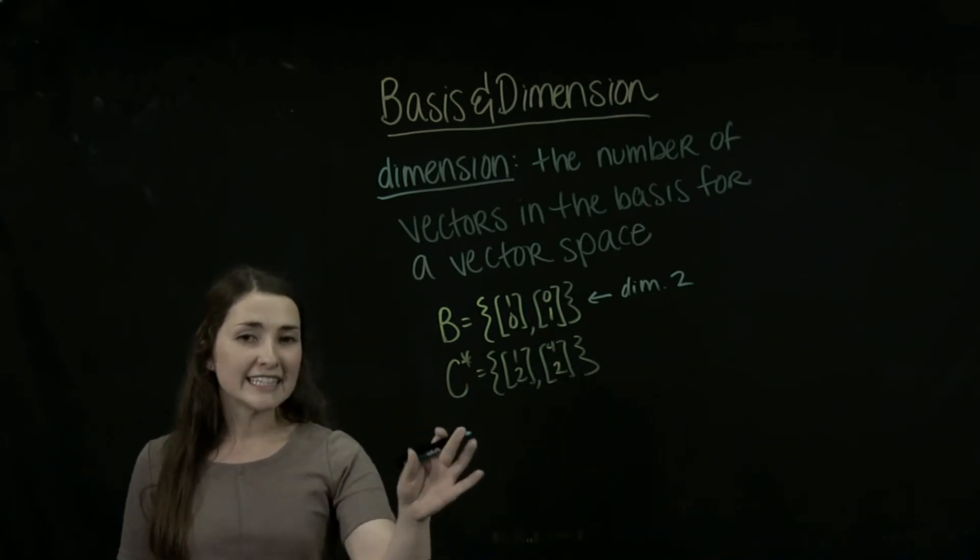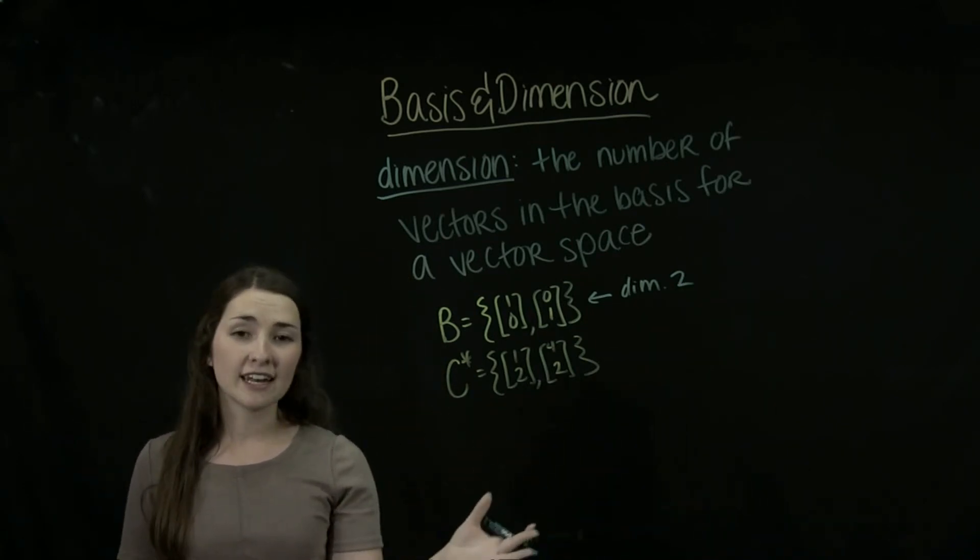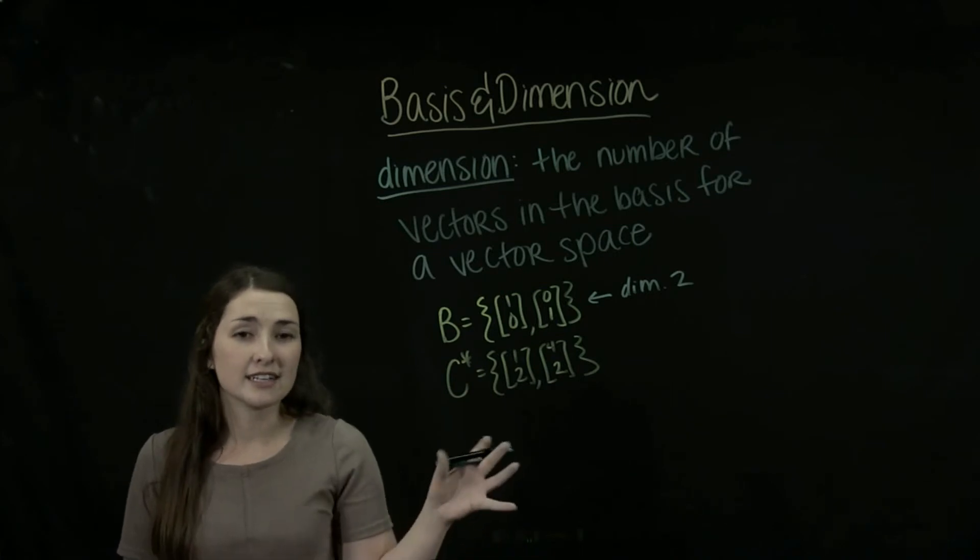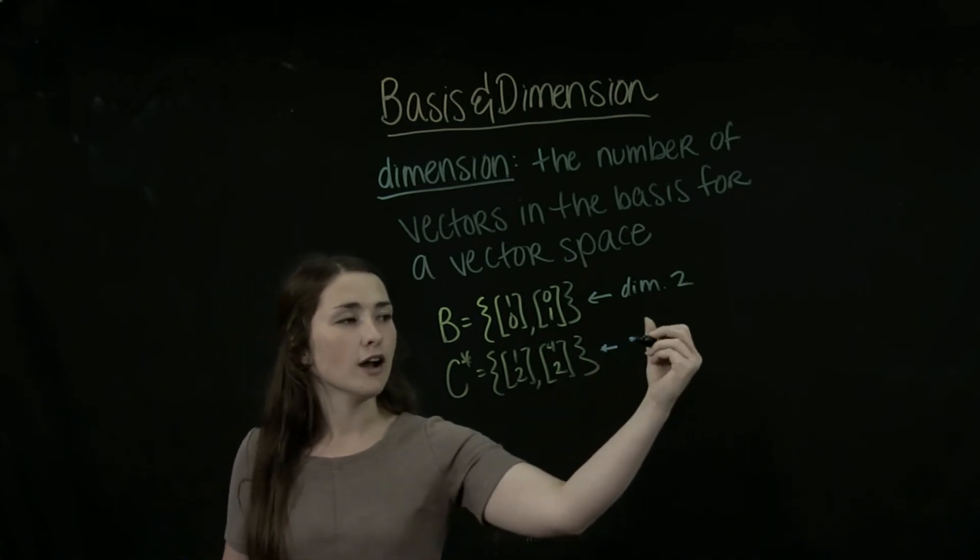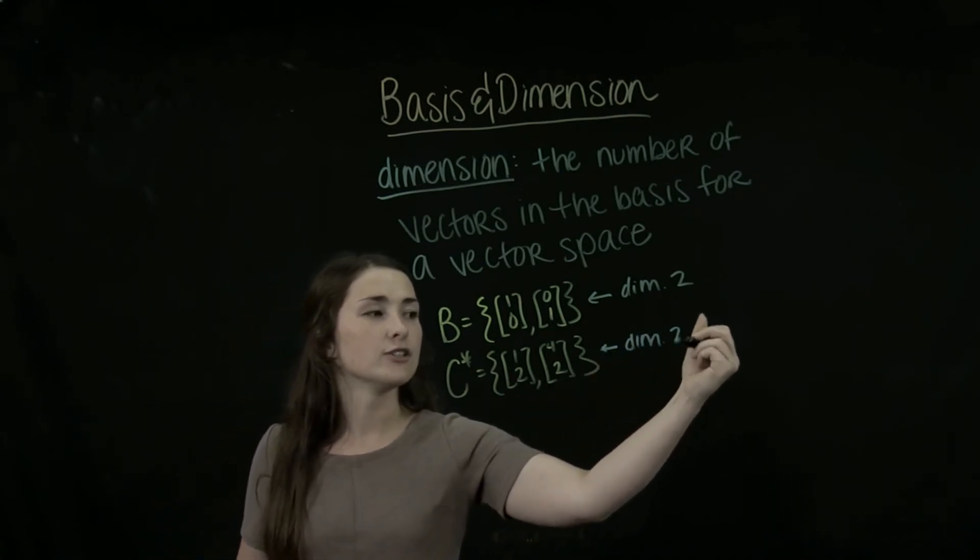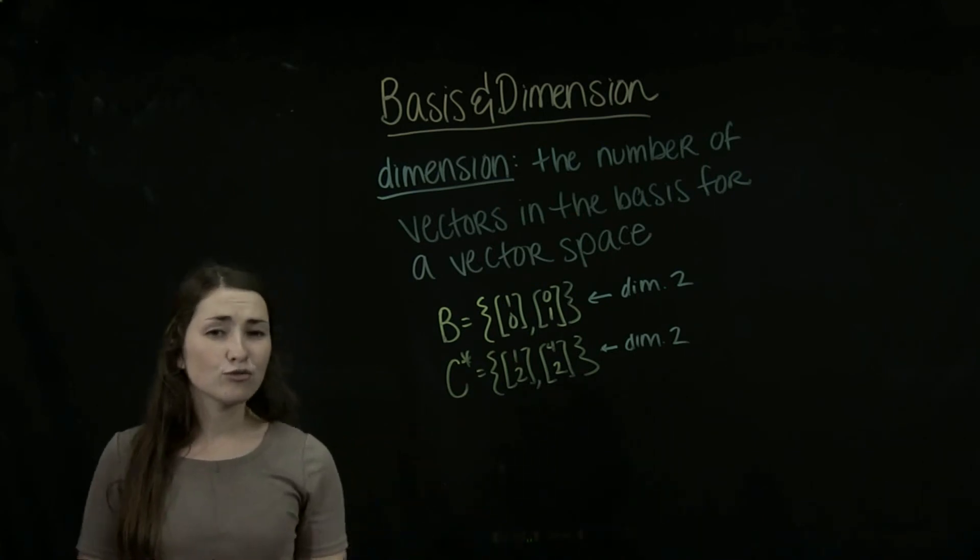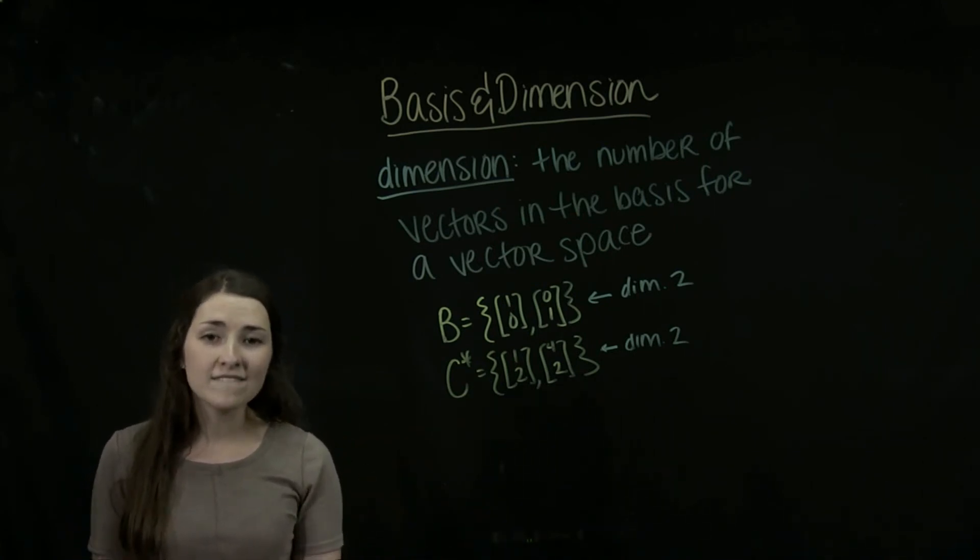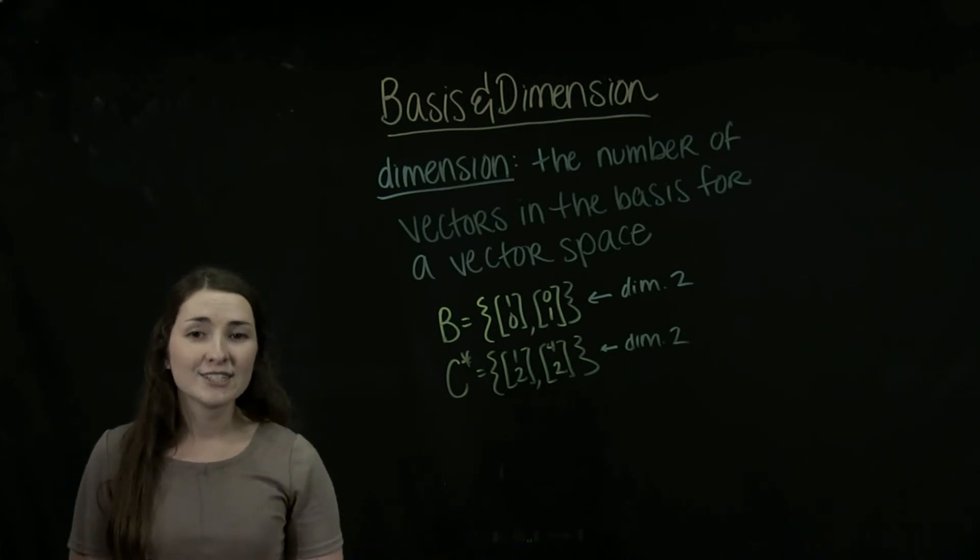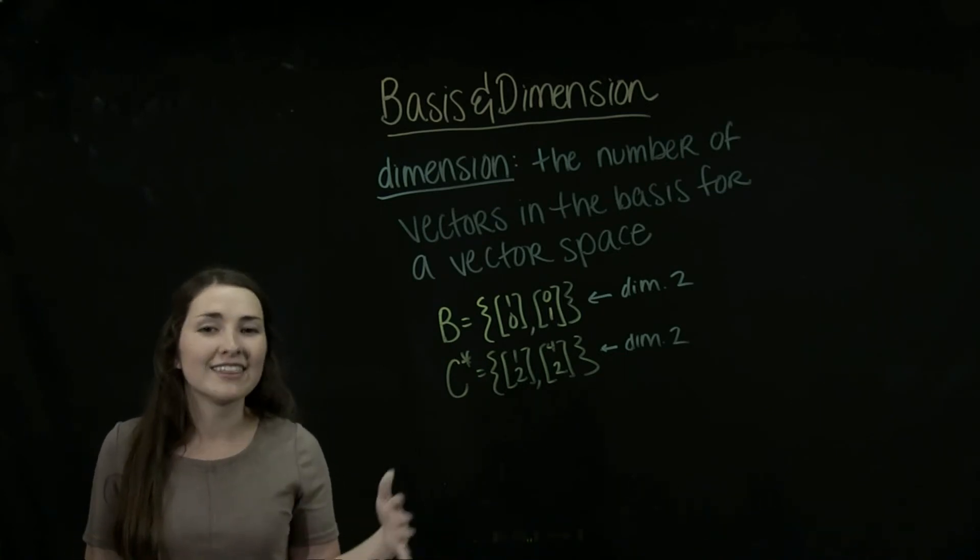Similarly, if we look at C star, we also decided it is a basis for R2 as it is linearly independent and spans R2. And it has two vectors in this basis, so it also has dimension 2. So this is going to give us a really interesting truth. All bases that span some vector space Rn is going to have dimension n.